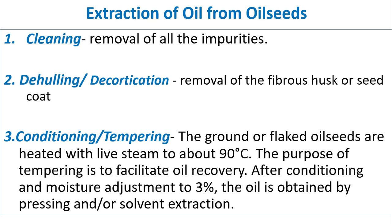Extraction of oil from oil seeds: The first step is cleaning — removal of all impurities. Second is dehulling or decortication — removal of the fibrous husk or seed coat. The next step is conditioning or tempering, where the ground or flaked oil seeds are heated with live steam to about 90 degrees Celsius to facilitate oil recovery.